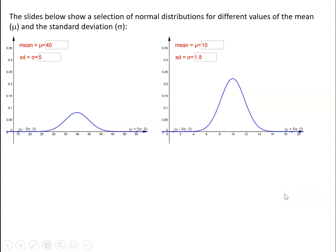Now, the slides shown below show a selection of different normal distributions with differing values of the mean and the standard deviation. So here we've got the normal distribution with mean 40 and standard deviation 5. And the two dots on the graph now show the two points which are 5 standard deviations away from the mean on the normal distribution. And we've got the same thing here but for a different normal distribution, one with a mean of 10 and a standard deviation of 1.8. We've got another one here where we've got a mean of 80 and a standard deviation of 3.